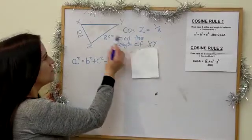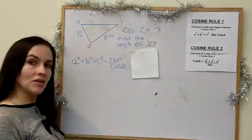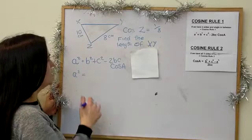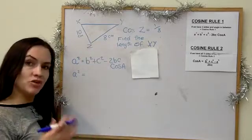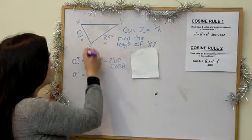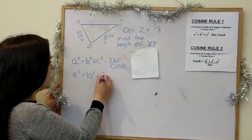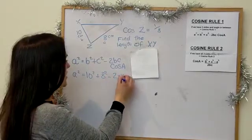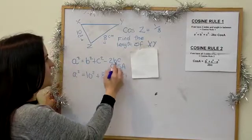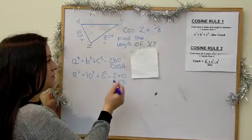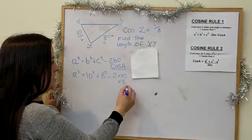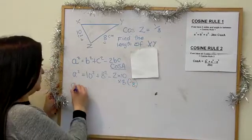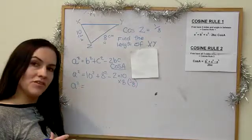We're asked to find the length of XY, so that's our 'a'. The two sides are 10 and 8. The formula gives: a² = 10² + 8² − 2 × 10 × 8 × cos Z, and since cos Z = 1/8, we replace cos Z with 1/8.